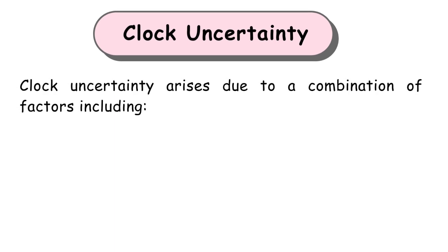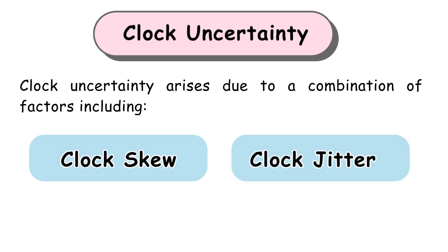Clock uncertainty arises due to a combination of factors including clock skew and clock jitter. In this video, we will dive into the clock skew.